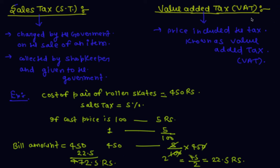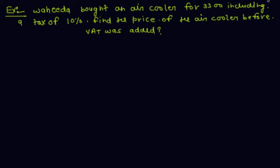Now I take one more example on VAT or value added tax. Vahida bought an air cooler for 3300 including a tax of 10%. Find the price of the air cooler before VAT was added.